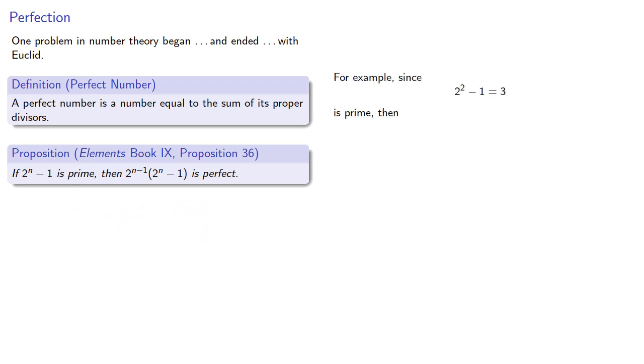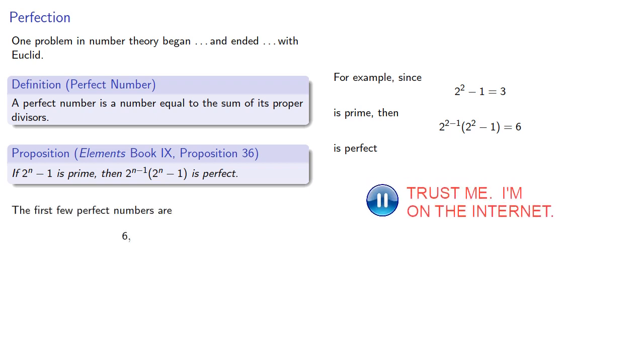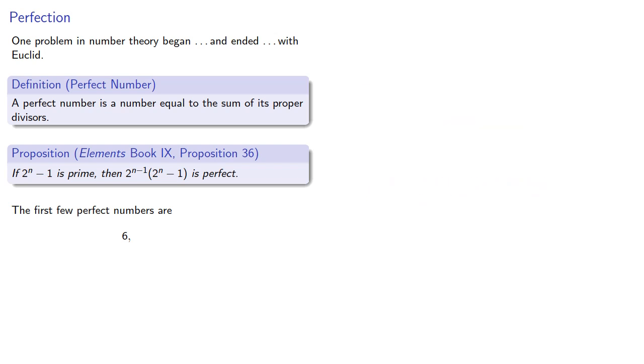For example, since 2^2 - 1 = 3 is prime, then 2^(2-1) times (2^2 - 1), that's 6, is perfect. We find that 2^3 - 1, that's 7, is prime, and so that gives us another perfect number. With a little effort, we can find a few more perfect numbers.